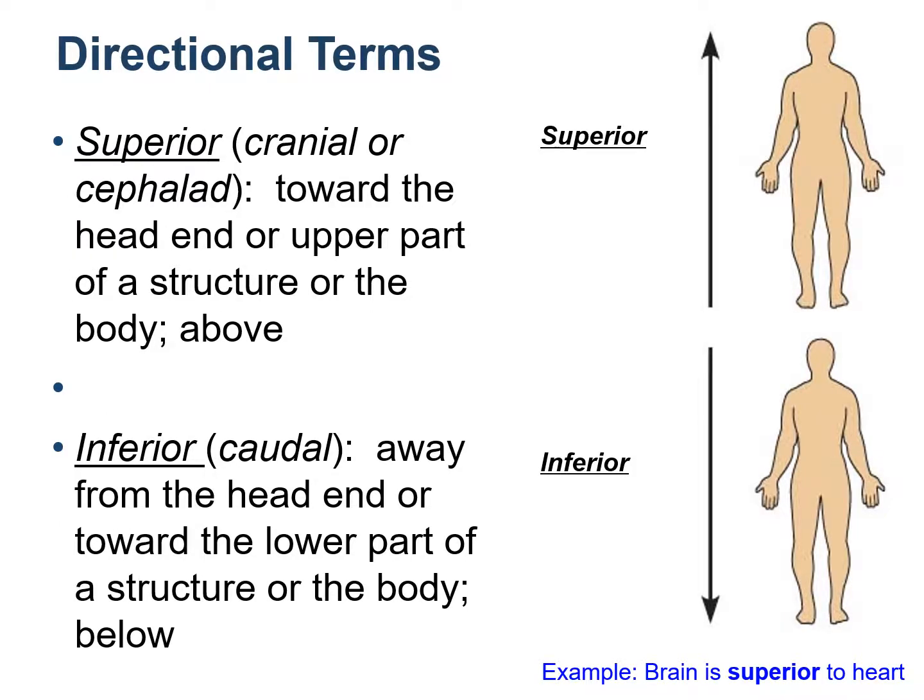Then we move on to directional terms. Directional terms usually exist in pairs — that means there will be two terms which usually have opposite meanings. The first set is superior versus inferior. Superior is also known as cranial or cephalad, while inferior is also known as caudal. Superior means towards the upper part of the body, while inferior means towards the lower part of the body. For example, the brain is superior to the heart — meaning the brain is located above the heart. Another way of saying the same thing: the heart is inferior to the brain, meaning the heart is located lower than the brain.